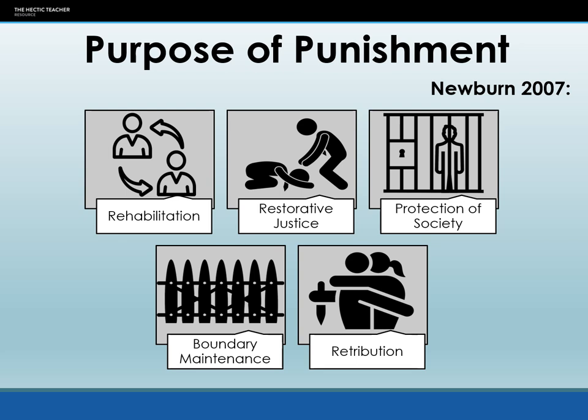Newburn brought together these ideas of what the purpose of punishment is, and he also pointed out that different people within the criminal justice system will have different purposes for the punishment. For example, a victim might want retribution and restorative justice — an apology and the criminal to be punished — whereas the criminal justice system may be more about rehabilitation, and the government might be more about boundary maintenance. Depending on who you are within the system, you'll have different views as to what the purpose of punishment is.